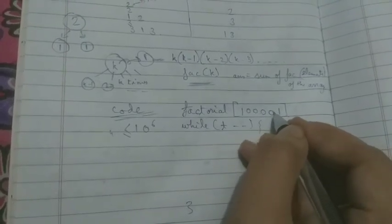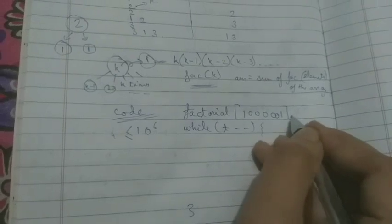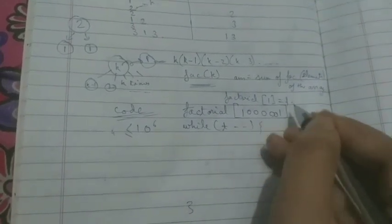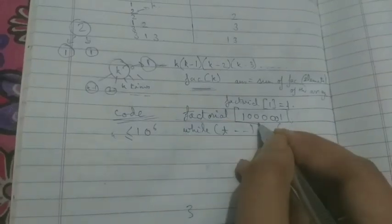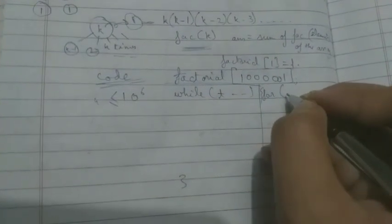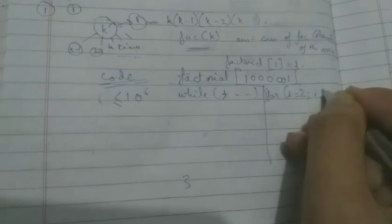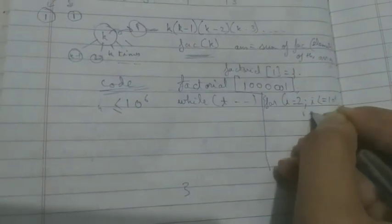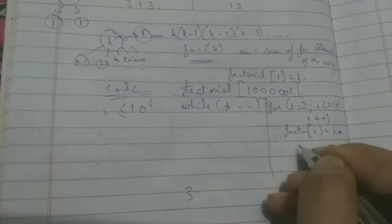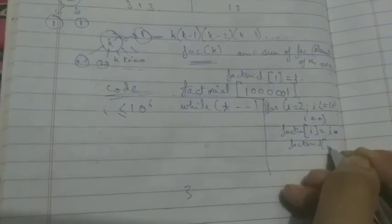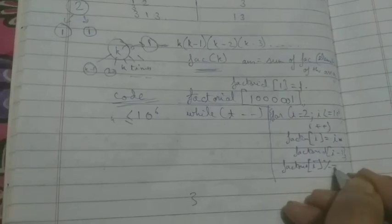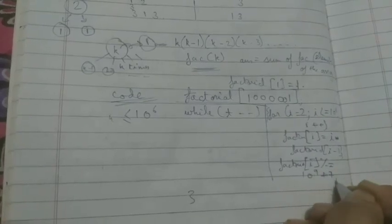Set factorial 1 as 1, and then run a loop: for i equals 2 to i less than equals to 10 to the power 6, i plus plus, and factorial i equals i into factorial i minus 1, and factorial i mod equals to 10 to the power 9 plus 7, the mod thing. Do this whole thing before the test case while loop.